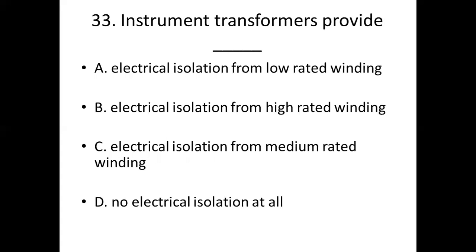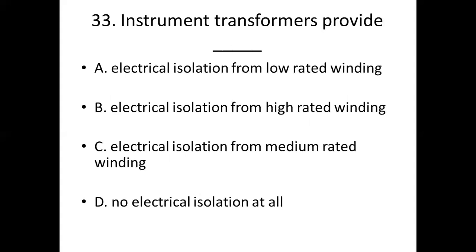Thirty-third bit. Instrument transformers provide dash. Option A: electrical isolation from low rated winding. Option B: electrical isolation from high rated winding. Option C: electrical isolation from medium rated winding. Option D: no electrical isolation at all. Answer: Option B, electrical isolation from high rated winding.